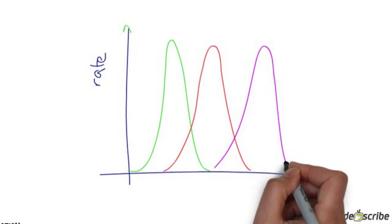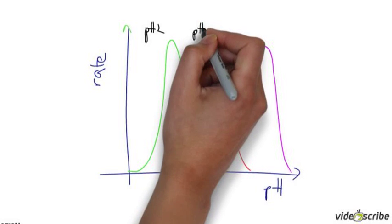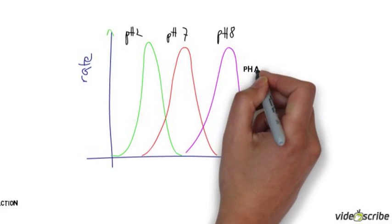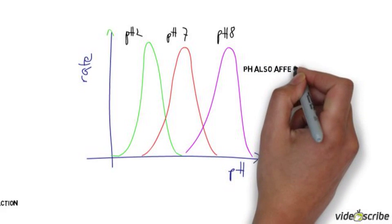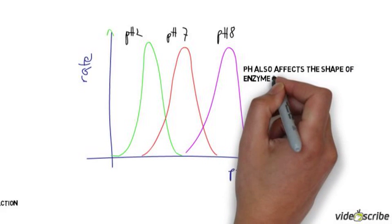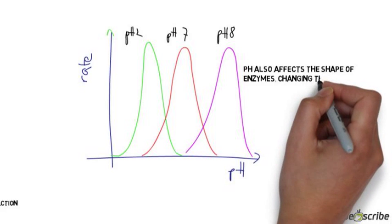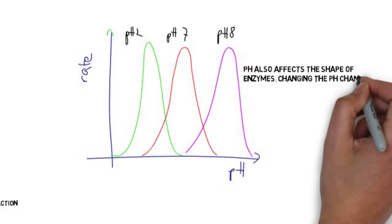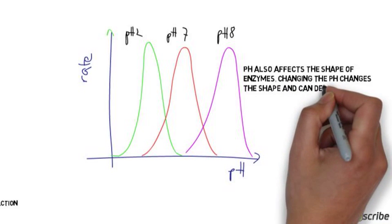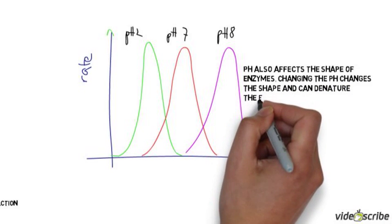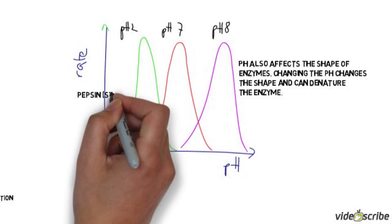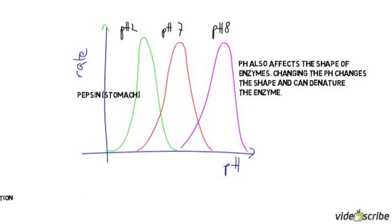Another way that enzyme activity can change is by looking at pH. pH also affects the bonding in the enzyme, and different pH levels give different shapes to different enzymes. The amino acids all have particular charges, and the extra charges in the surrounding liquid change the shape — so the enzyme can also become denatured. For example, something like pepsin, which is produced in the stomach, works best at pH 2.